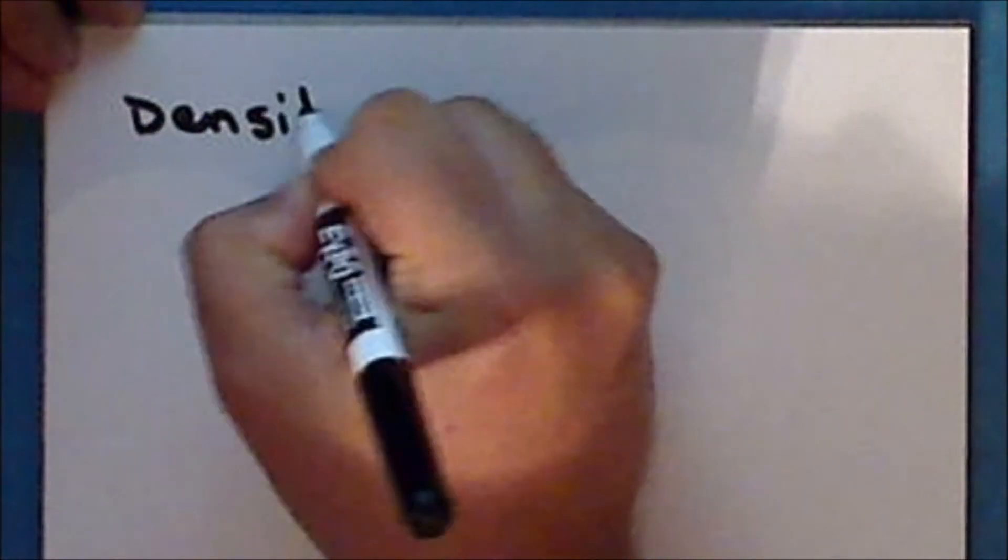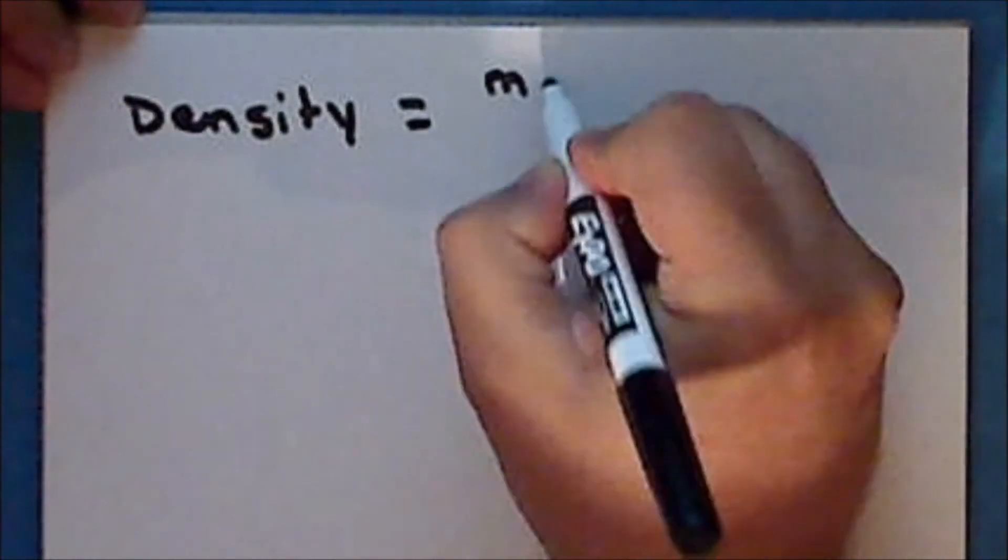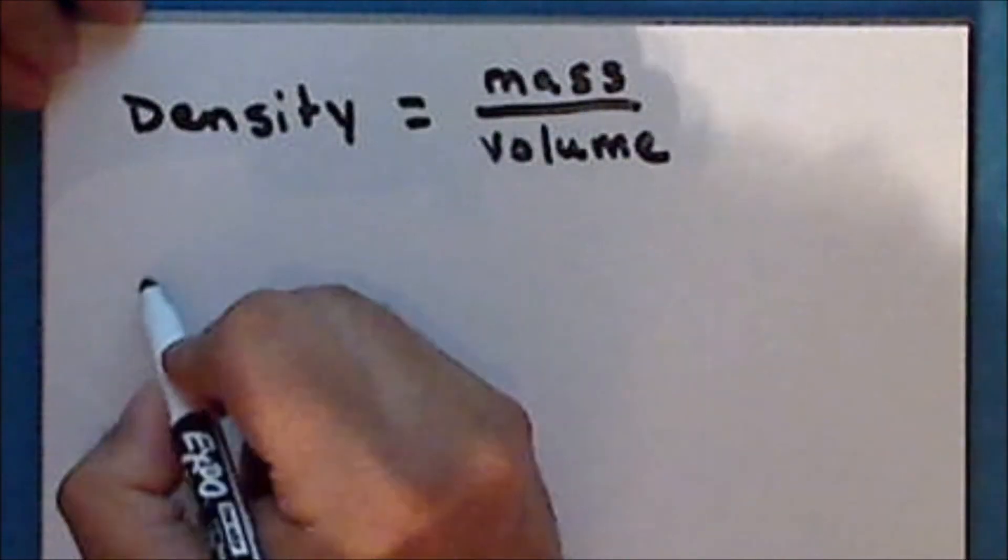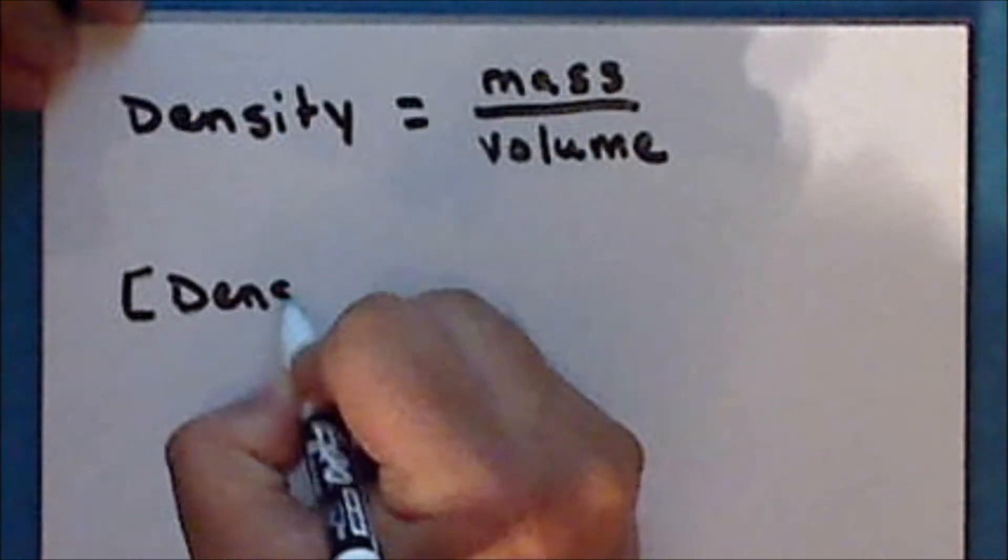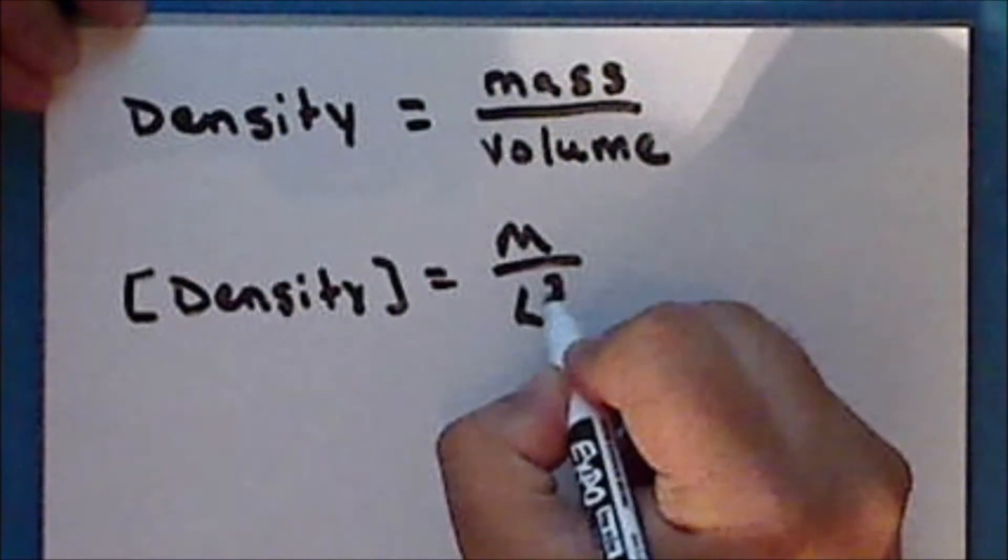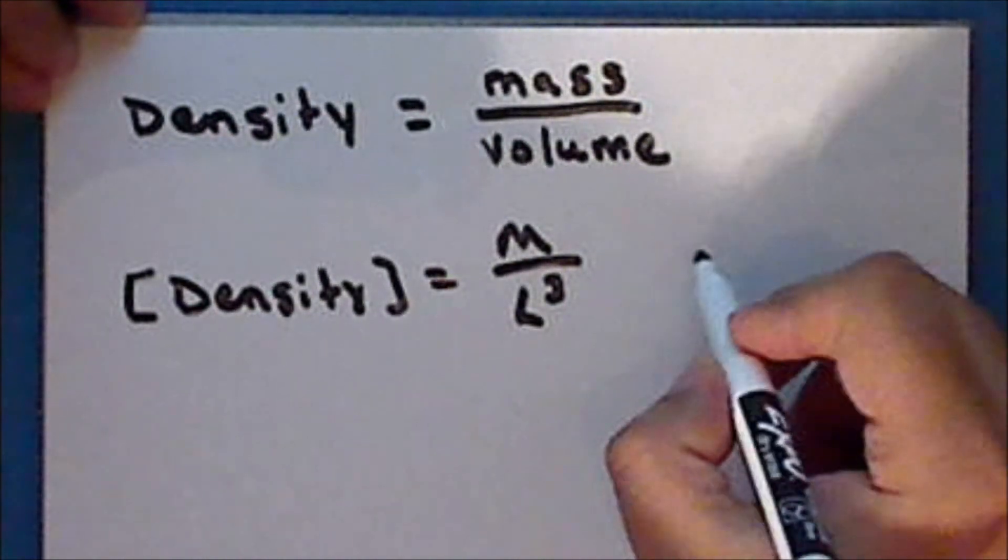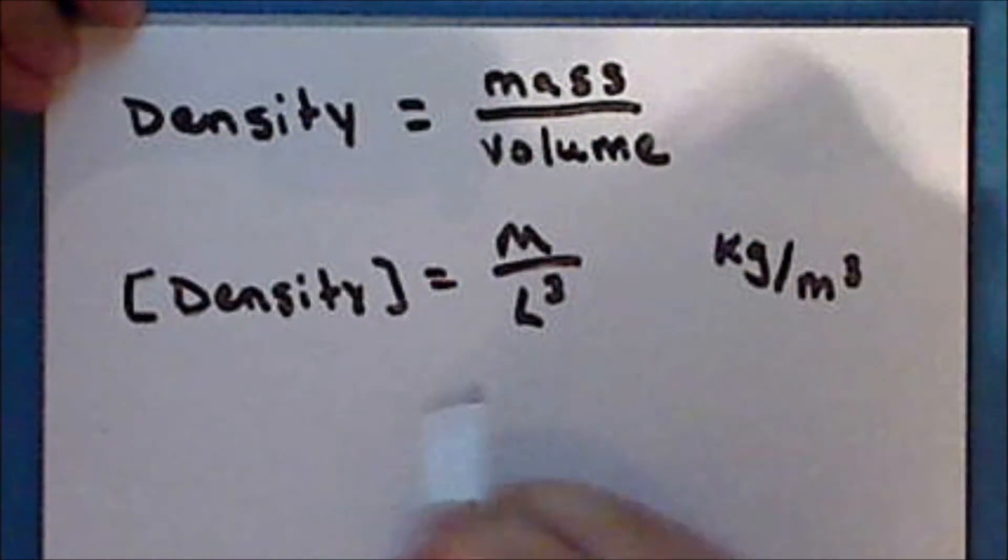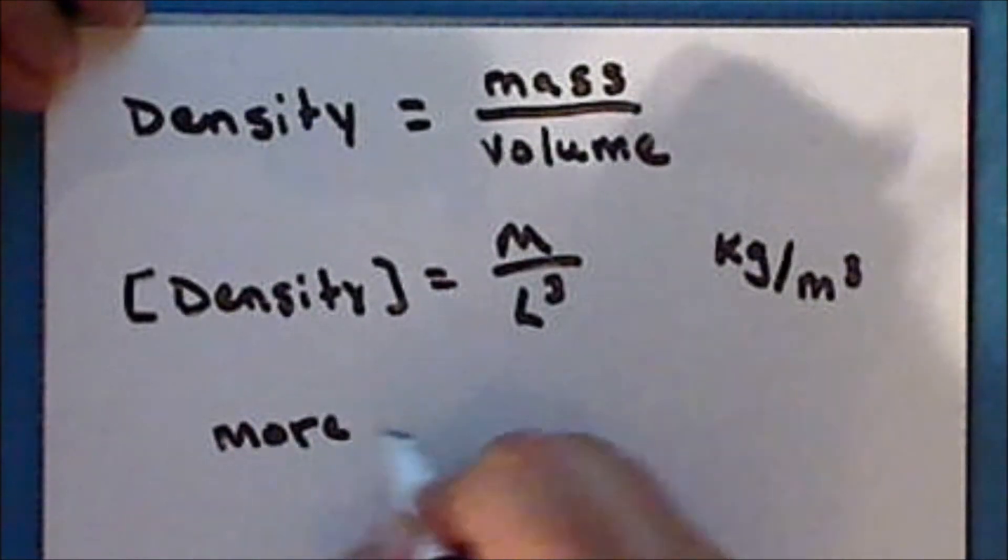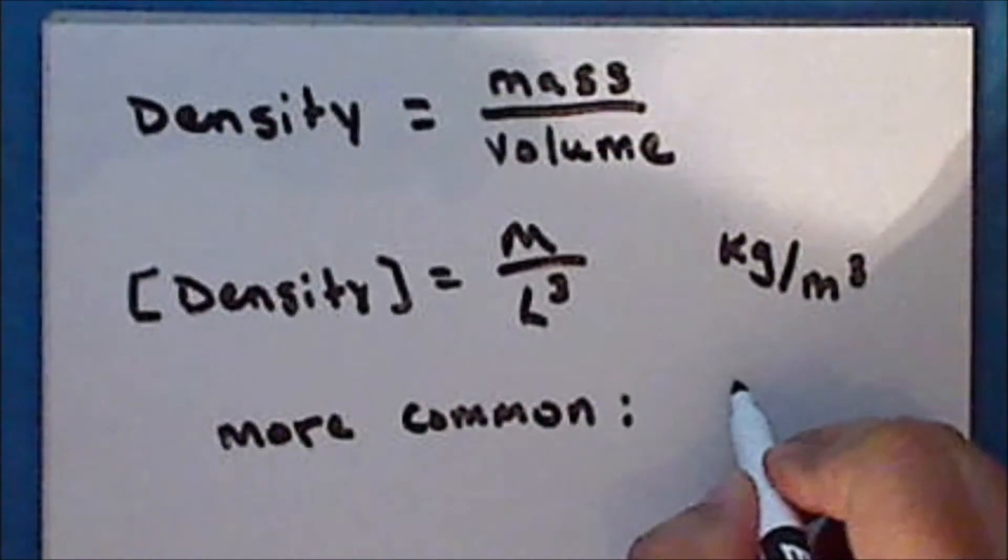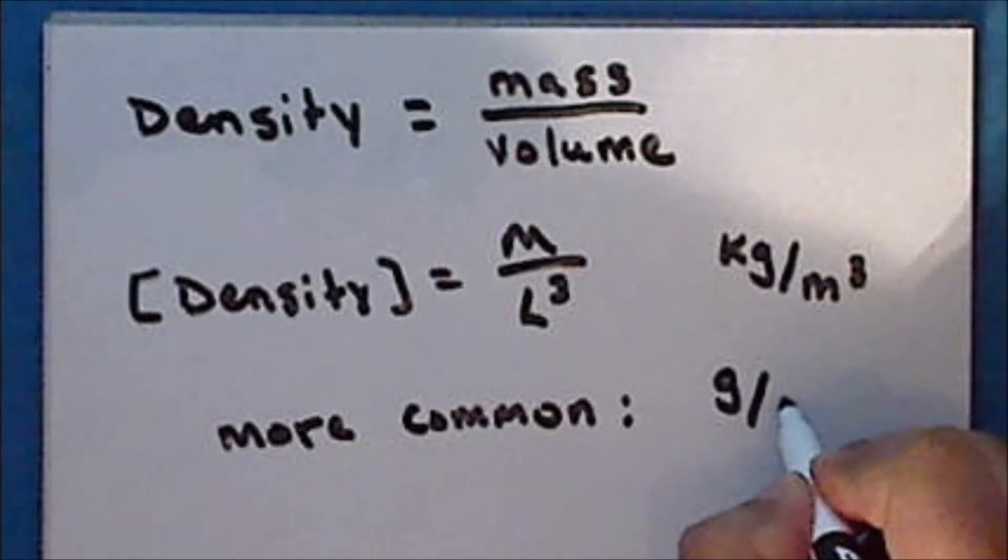One property of matter is its density, which is defined to be its mass per unit volume. And so the dimension of density is mass over length cubed, so that the standard unit for density is the kilogram per cubic meter. However, it is much more common, especially in tables of densities, to have the units of grams per cubic centimeter.